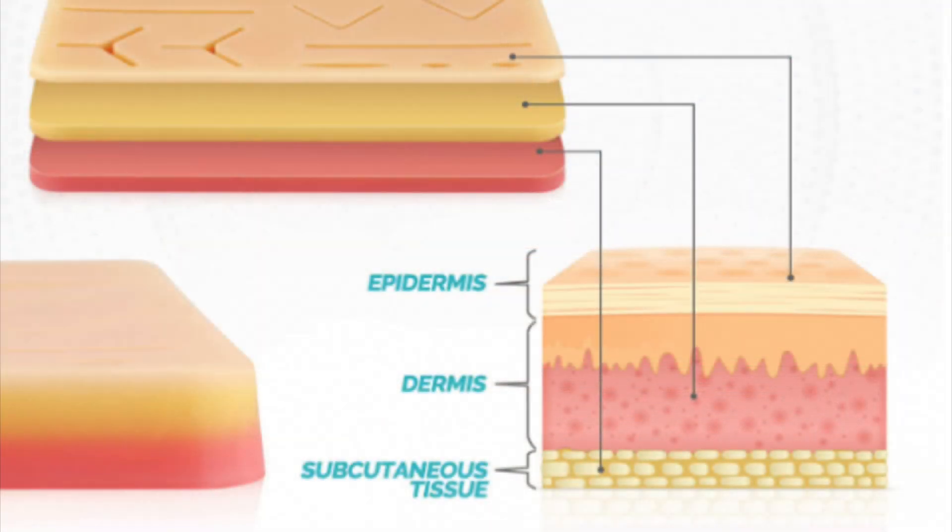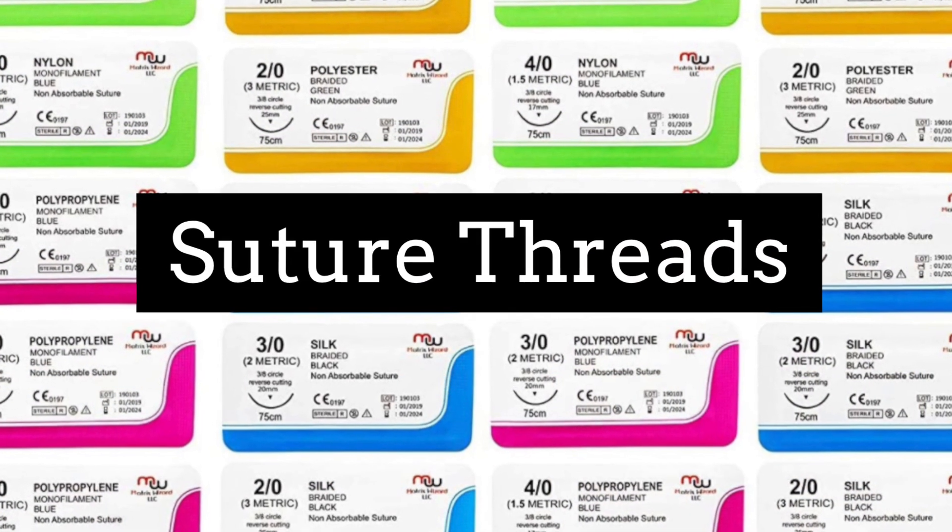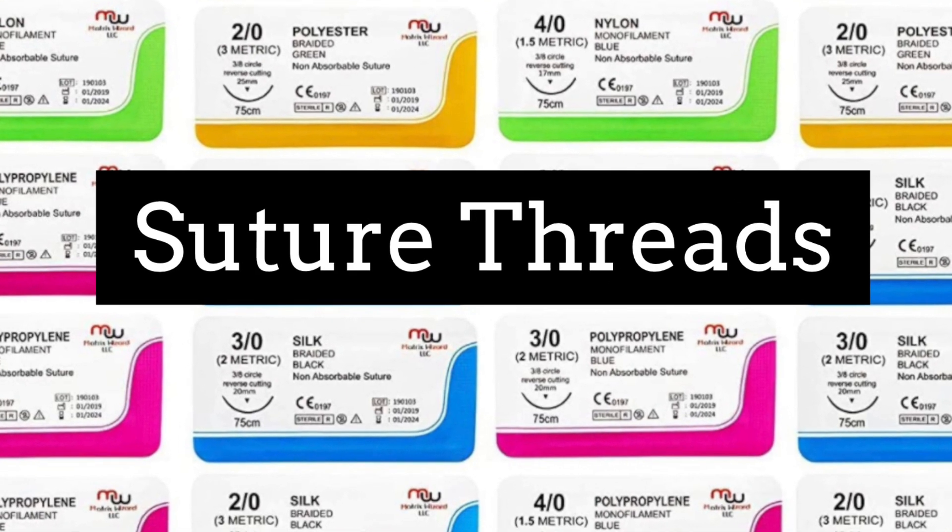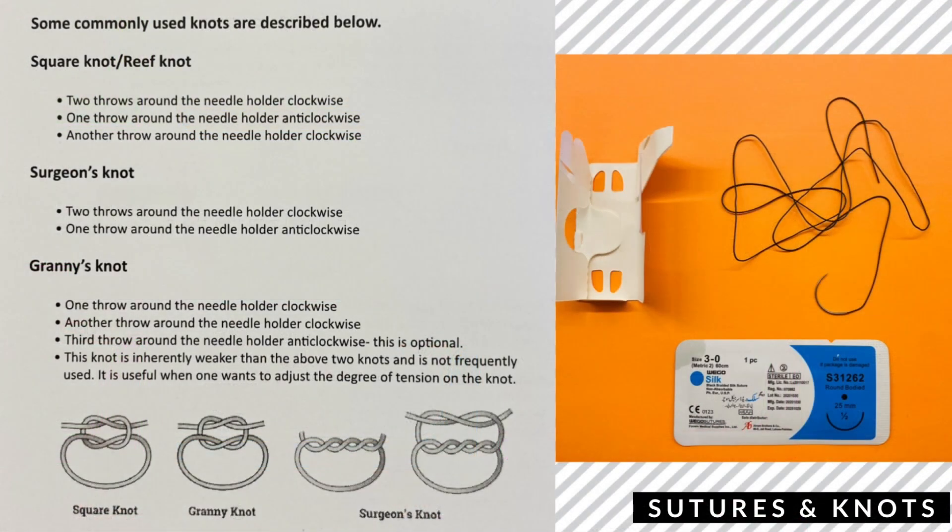This image shows you which layer is the epidermis, dermis, and sub-Q. Your kit will also have suture threads with a needle attached. After you're finished with this lab, you can come back to this image or to your booklet and learn some different knotting techniques.